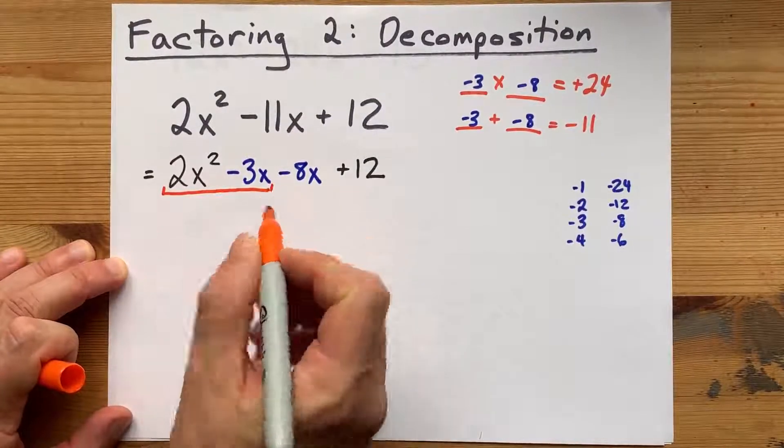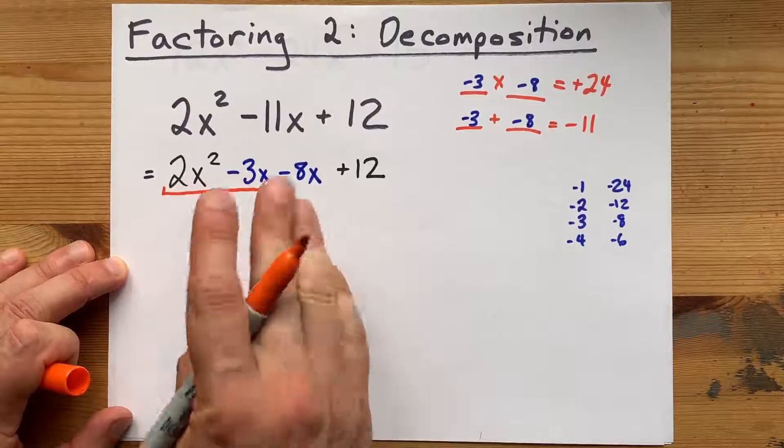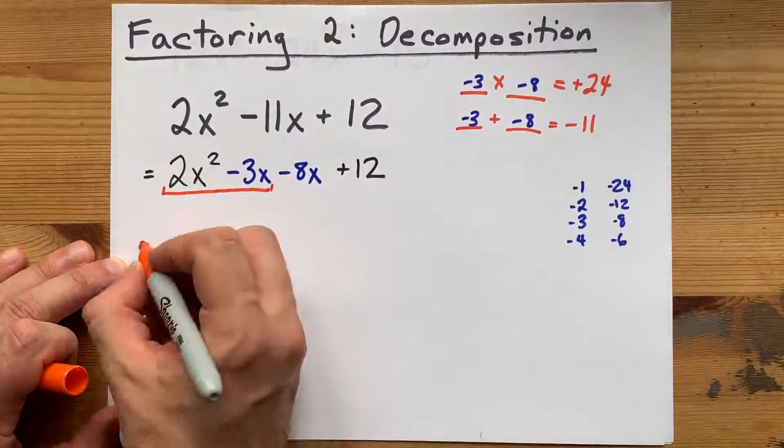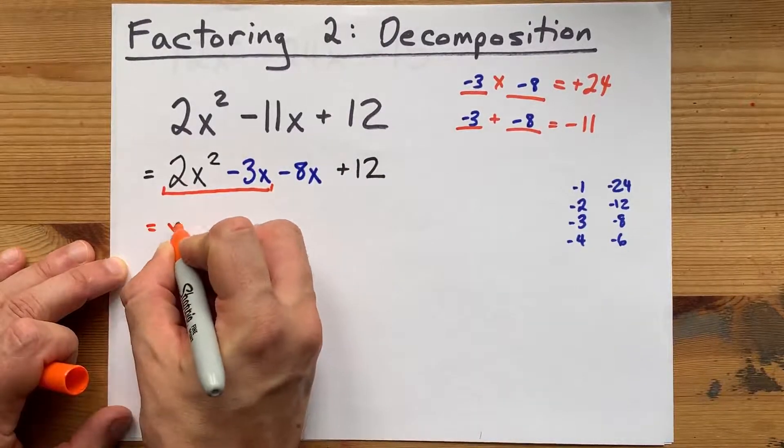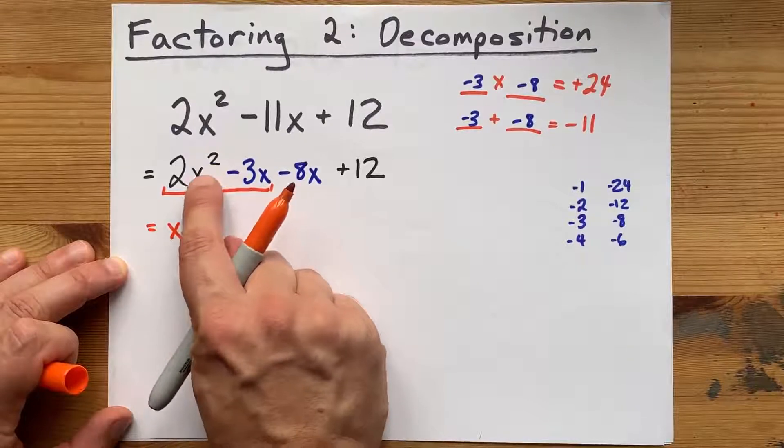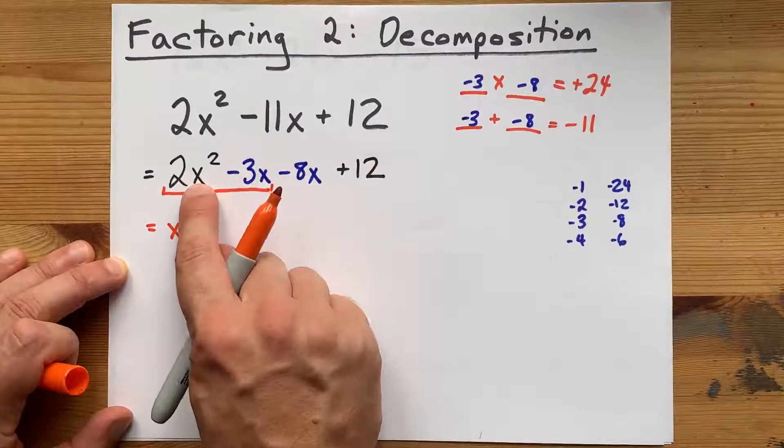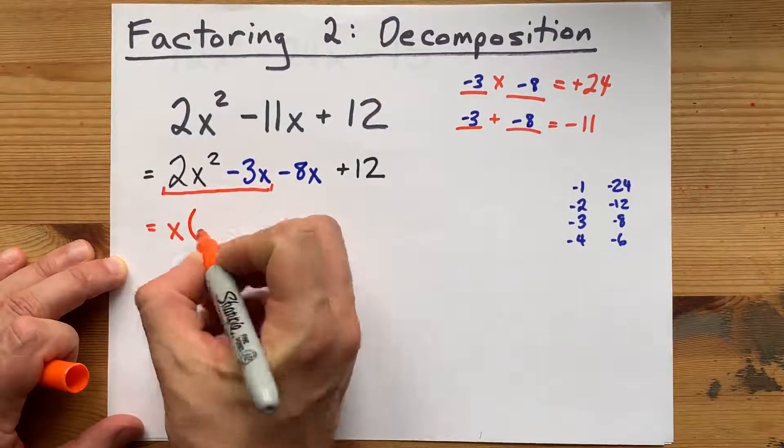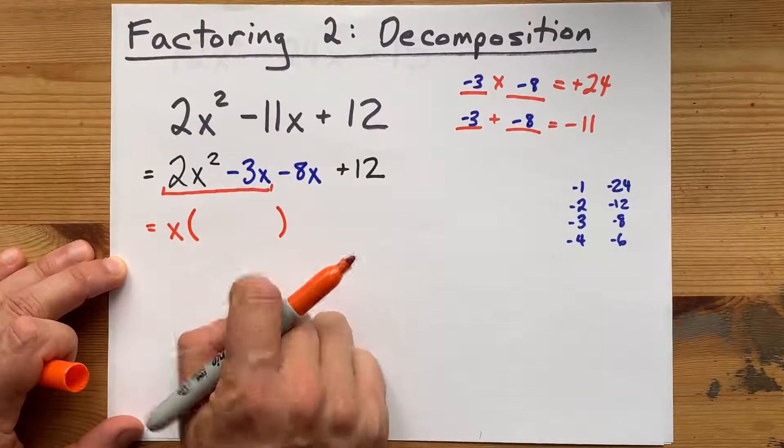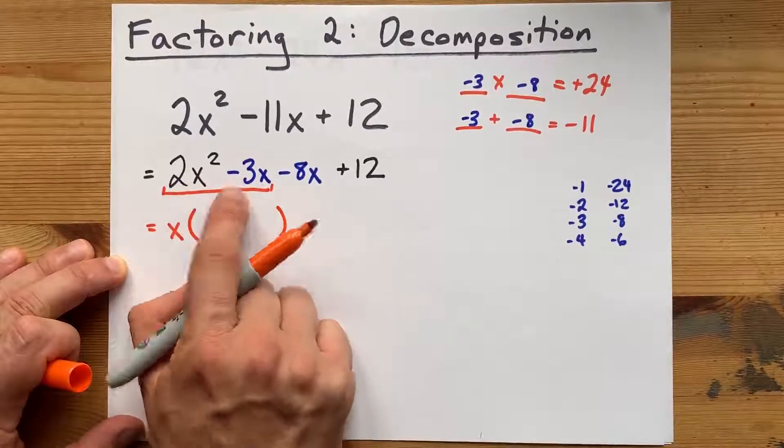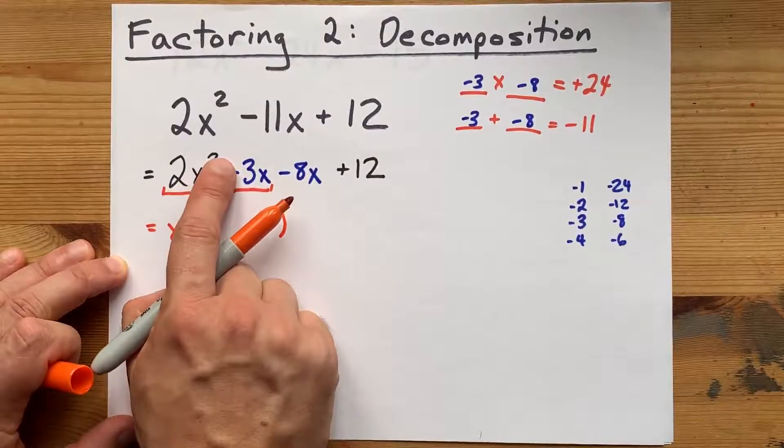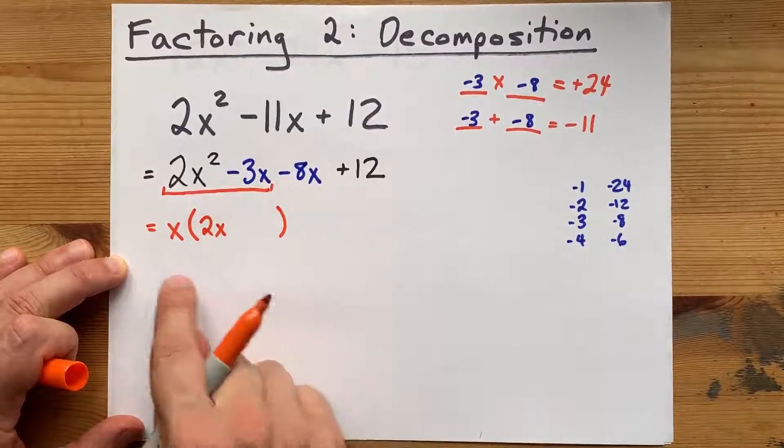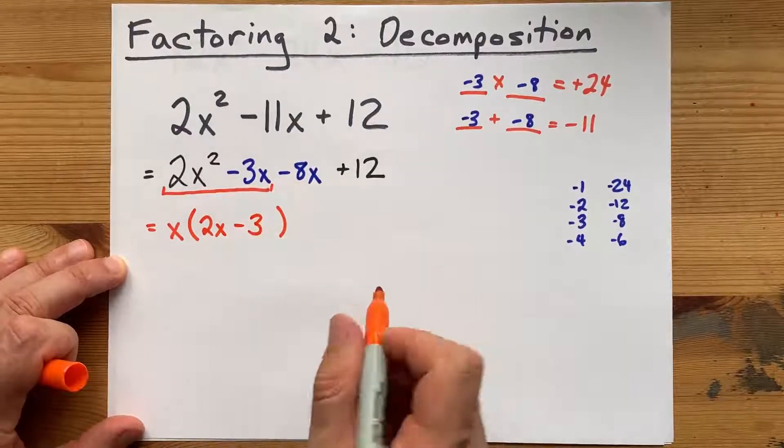Are there any numbers that divide nicely into both 2 and 3? No. Are there any letters that are common to both of these terms? Yes. In fact, you can find 1x in each of them. I know there are x squareds, or two different x's multiplied here, but there's only one here, so we can only pull one out. And by common factoring, I mean write it in front of a set of brackets and divide each of those terms by it. 2x squared without one of the x's leaves you with 2x. Minus 3x without x is just minus 3.